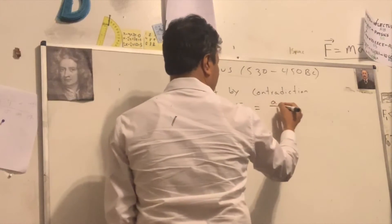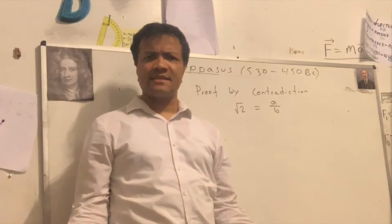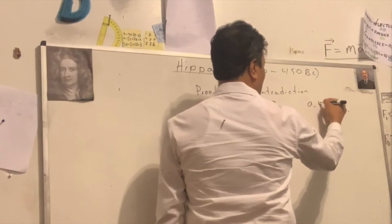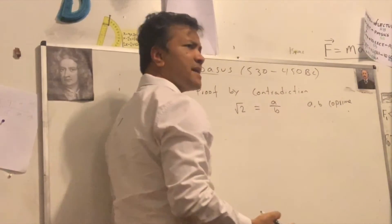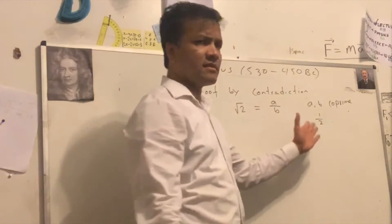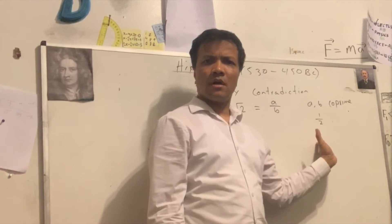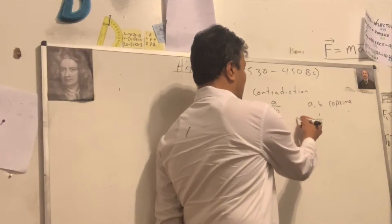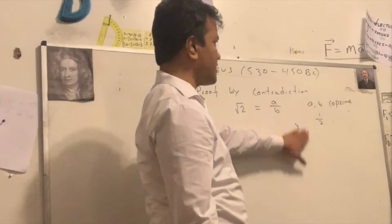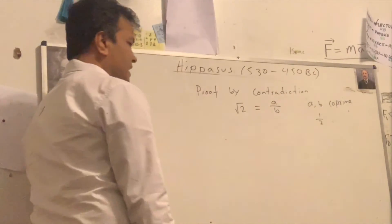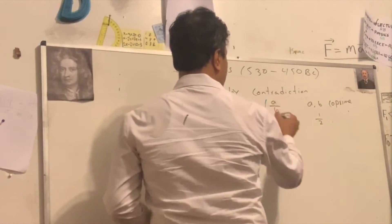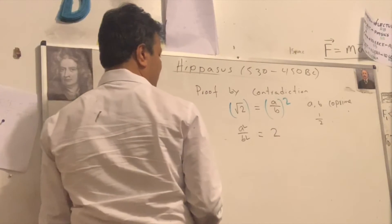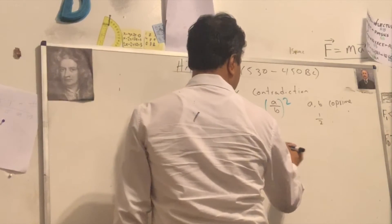Assume the square root of two equals A over B, where A and B are co-prime — meaning the GCD of A and B is 1, nothing else. So A over B is already in lowest form; for example, it cannot be 4 over 2 because those are not co-prime. Now I can square both sides: A squared over B squared equals 2. Cross-multiplying: A squared equals 2B squared.